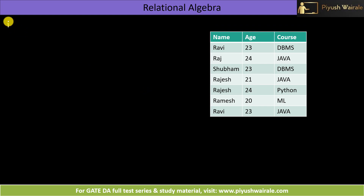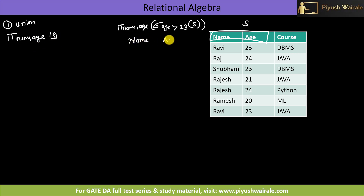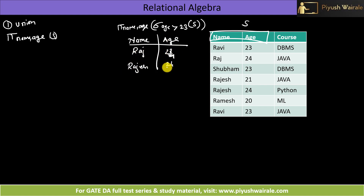Let us discuss some examples. For union: pi of name and age from S, union pi of name, age with condition age greater than 23 from S. For the second expression — age greater than 23 — Raj with age 24 will be there, and Rajesh with age 24 will be there. The rest are less than 23. So we have two students: Raj and Rajesh.